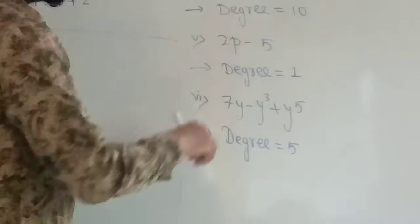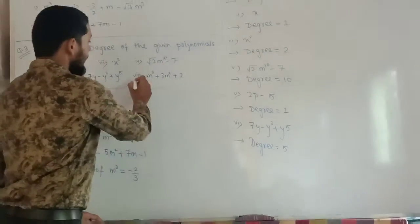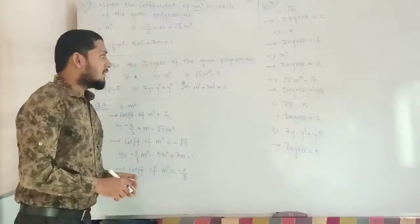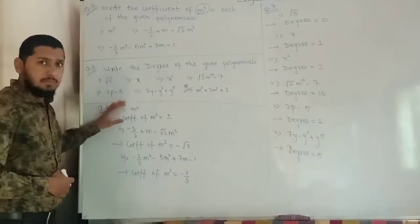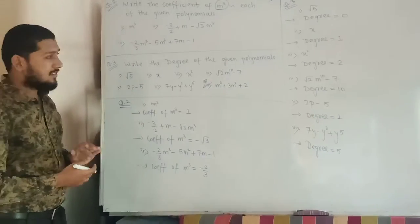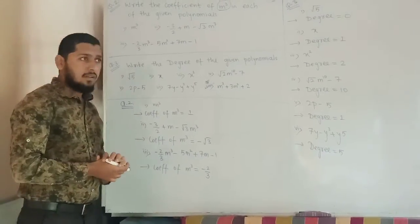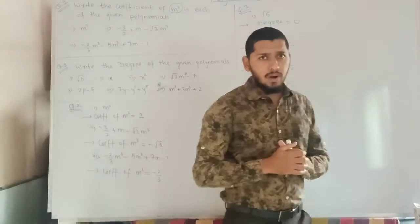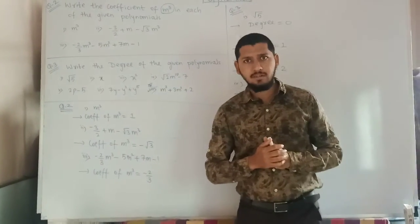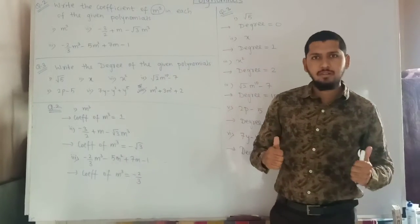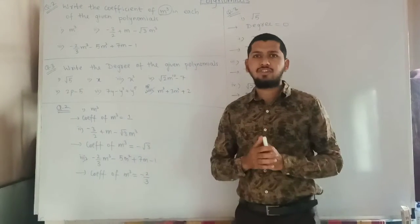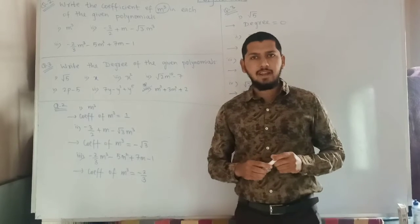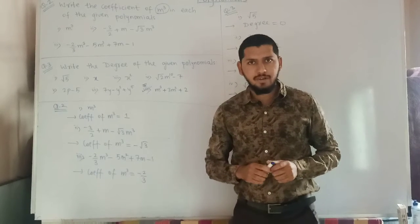This completes the example. The last example you can try on your own. So we have completed questions number 2 and number 3. In this lecture we studied what coefficients are and what degrees are. I hope you understood. If you have any problem with this lecture you can ask me in the group. I will send you the notes and assignments. Thank you.